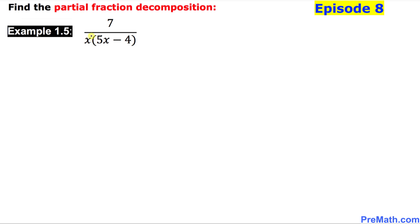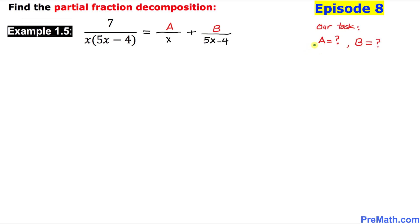We'll just focus on the denominator. We've got two linear factors. That means when we do the partial fraction, we're going to put down two fractions. So the first one is going to have the first linear factor x, and the second one is 5x minus 4. For the first fraction I'm going to put down constant A, and for the second fraction, constant B. Our task is to find constants A and B.